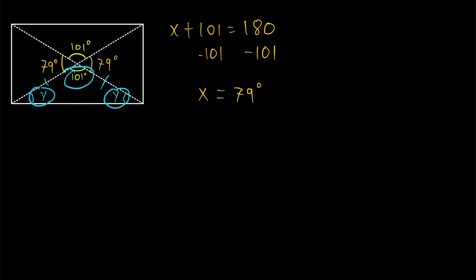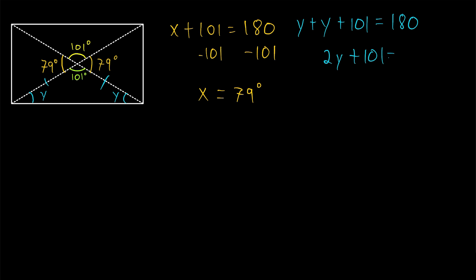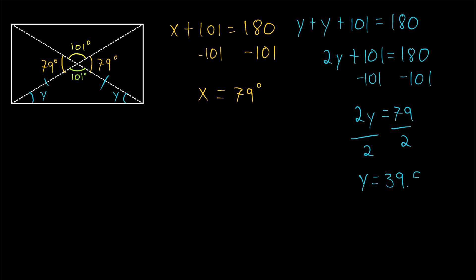Since these two base angles are equal, we call each one y. We have y plus y plus the third angle 101 equals 180. Combining the y's: 2y plus 101 equals 180. Subtracting 101 from both sides gives 2y equals 79. Dividing both sides by 2, we have that y is equal to 39.5 degrees.